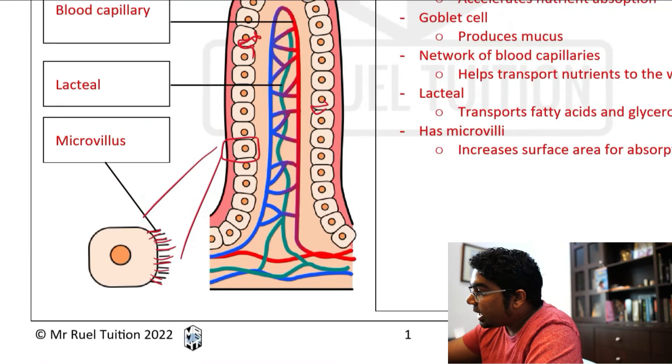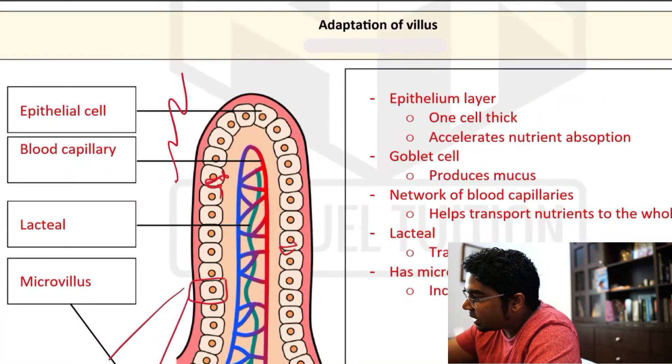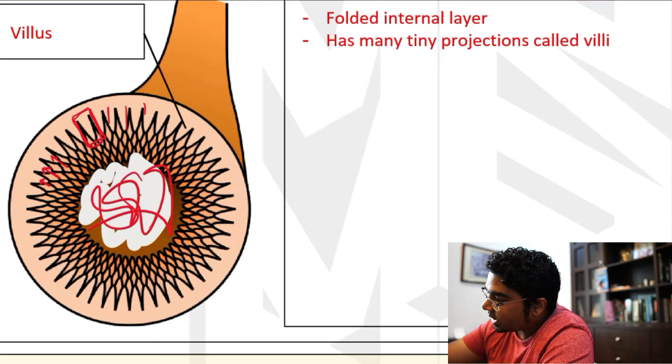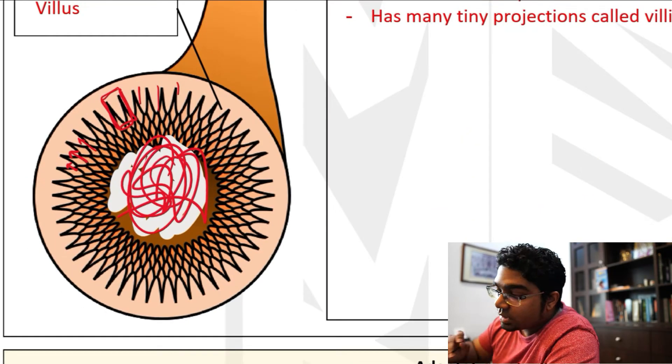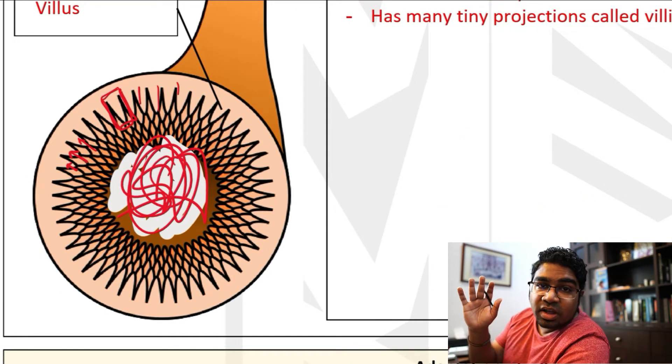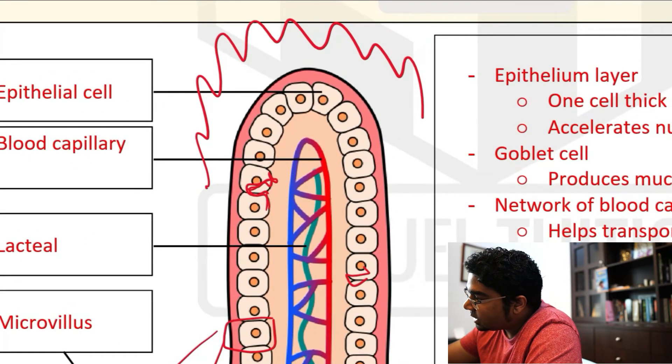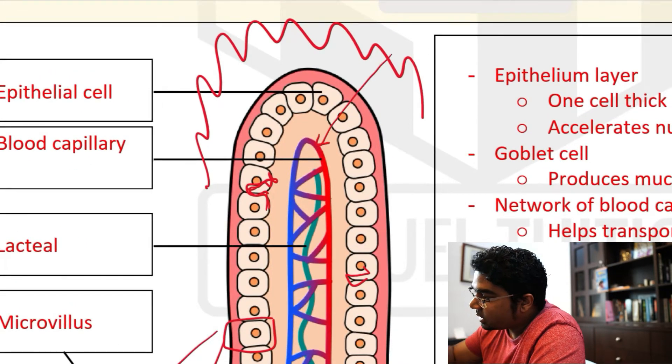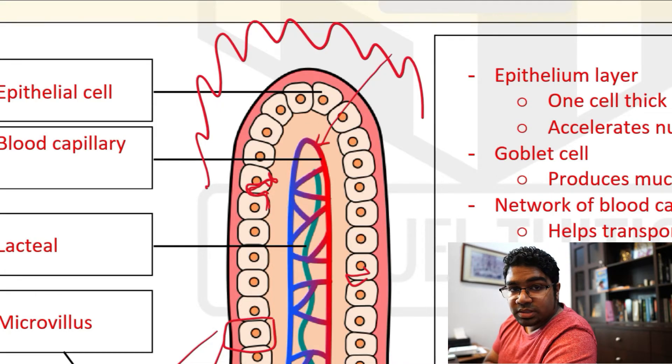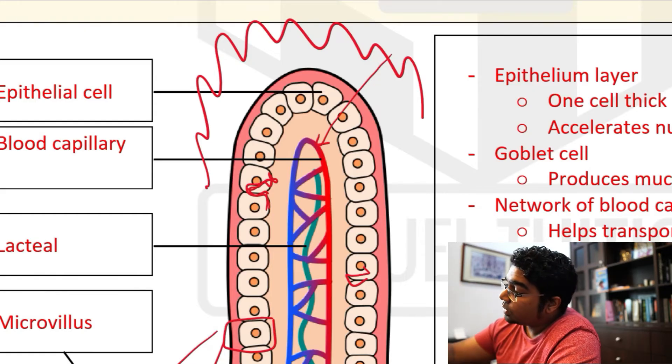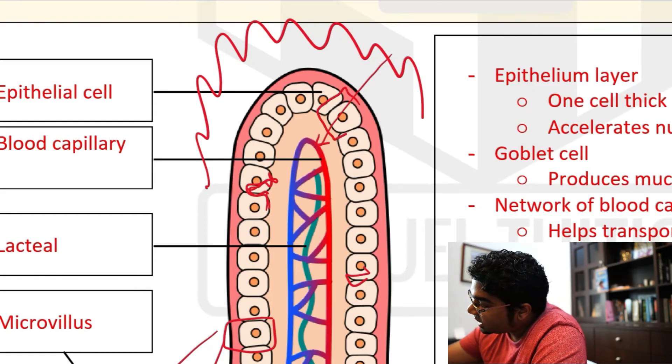All of these are absorbed through the epithelial cell into the blood capillaries because these are water soluble. Remember, this space out here is actually the lumen of the ileum. This is the space where all the nutrients are after digestion. And so what must happen is, these nutrients must go to the blood. That's the goal.